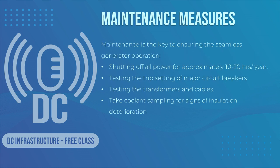A preventative maintenance program is going to require shutting off all power for approximately 10 to 20 hours once a year. This will help to check the tightness of all medium voltage (MV) and switchgear connections to ensure reliability of your generator. If a total shutdown is not possible, thermal imaging can be used to detect any hot spots caused by electrical terminations and connections. The trip settings of major circuit breakers should be tested, transformers and cables should be tested, and coolant samples should be taken for signs of insulation deterioration.